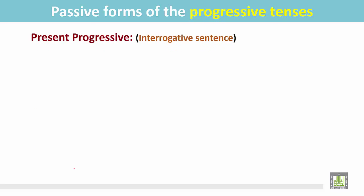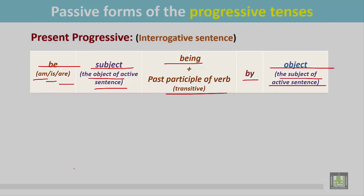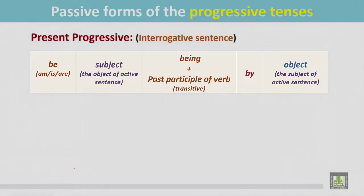Present progressive interrogative sentence. See the structure. The structure is quite different here — the sentence begins with the be verb. According to the number and person of the subject, use am, is, or are. Then the subject, which is the object of the active sentence. After that, for the progressive tense, use 'being' before the past participle of the transitive verb. Then the preposition 'by', and finally the object, which is the subject of the active sentence.